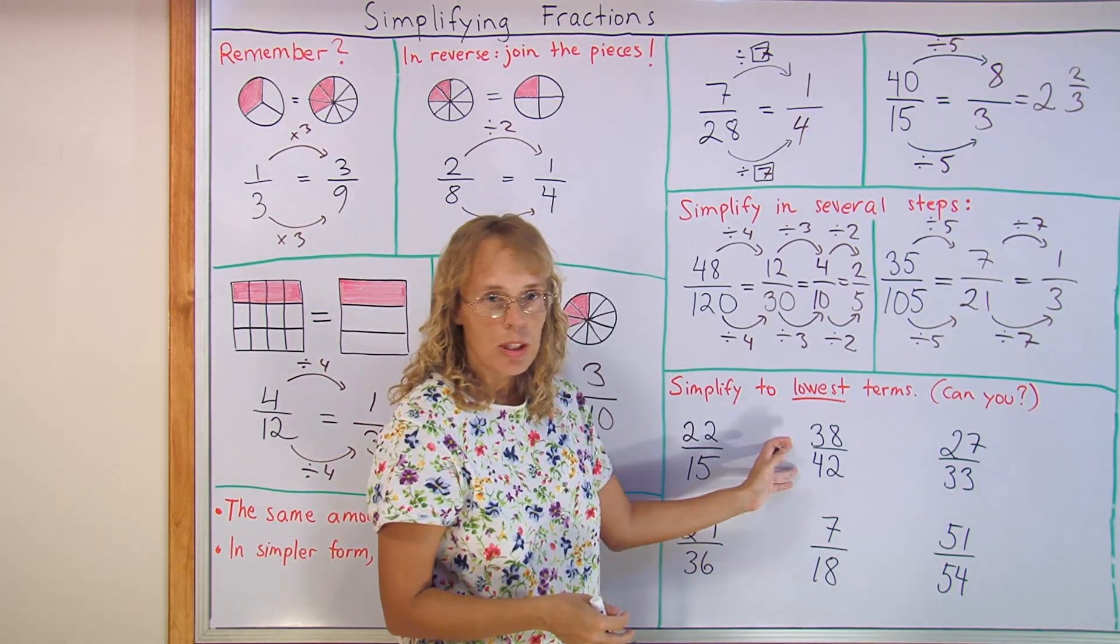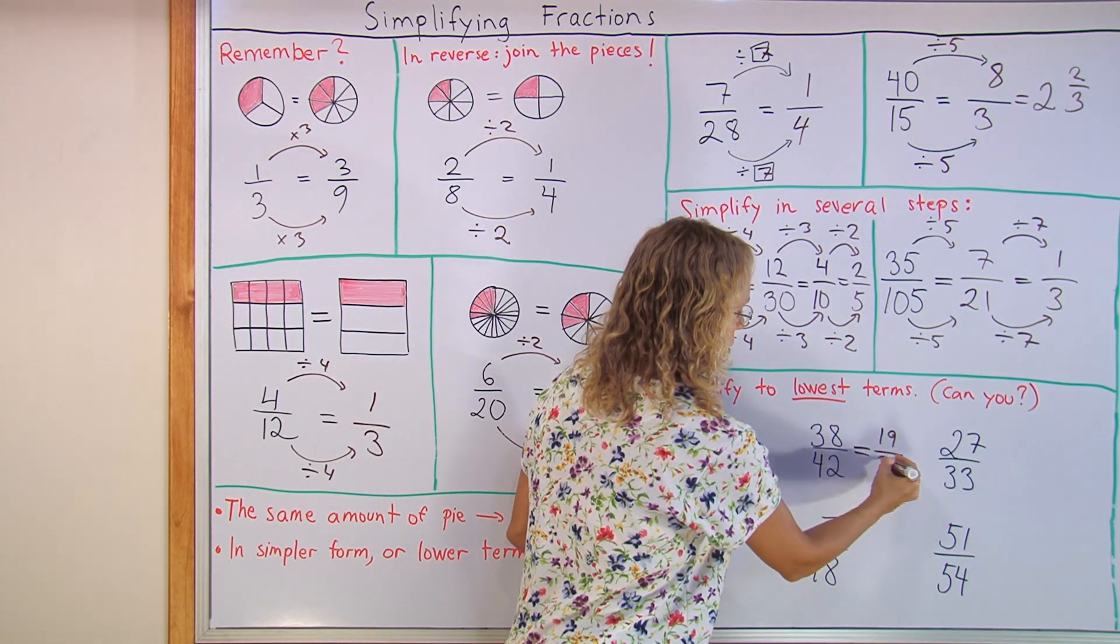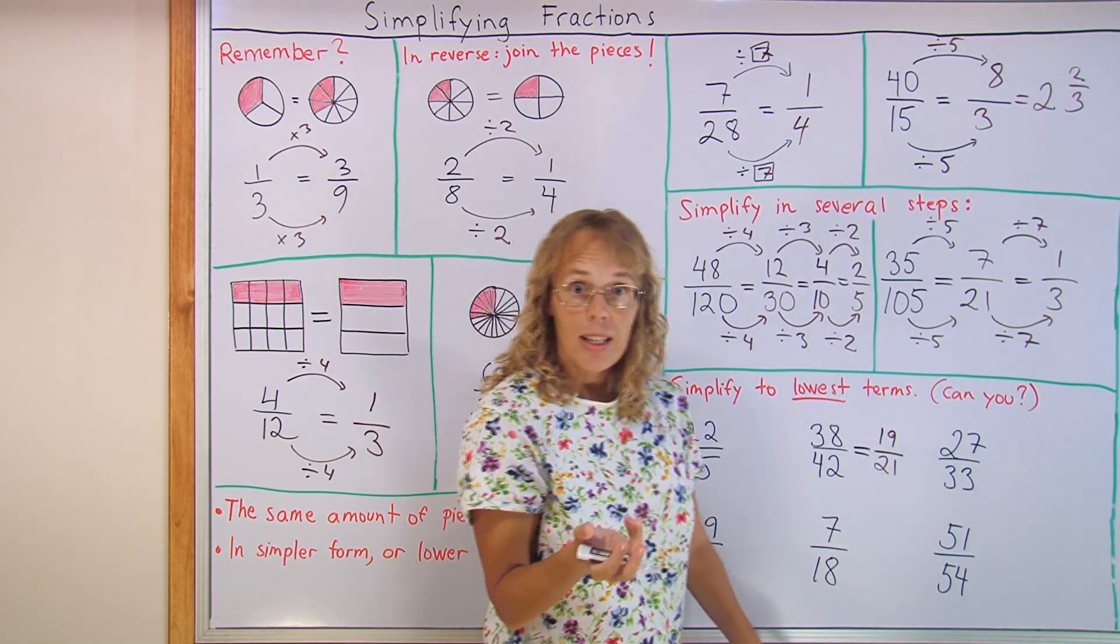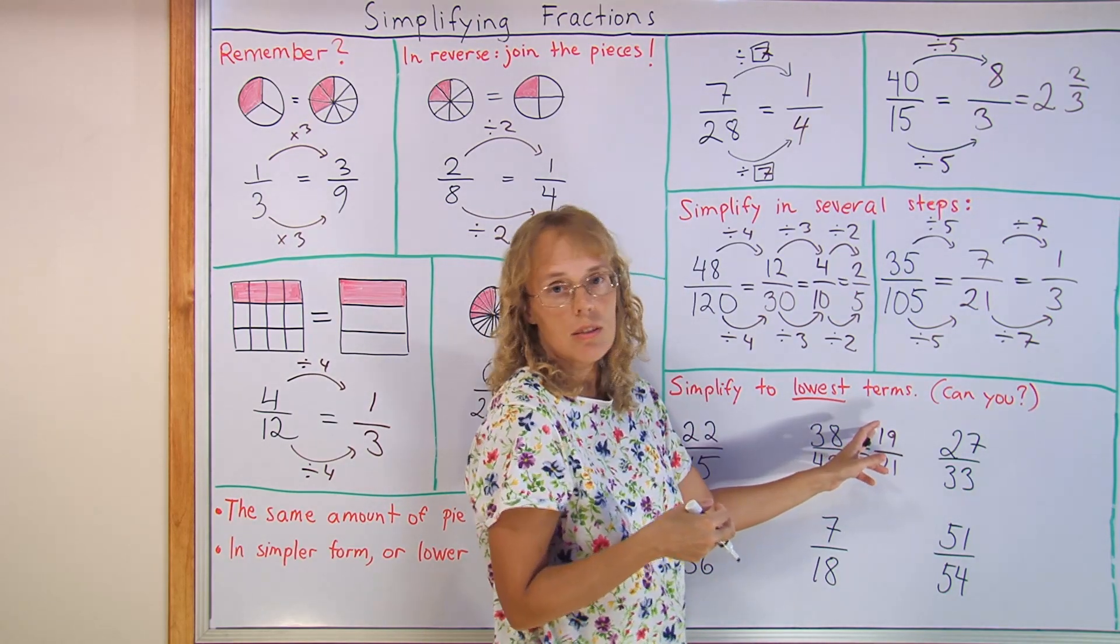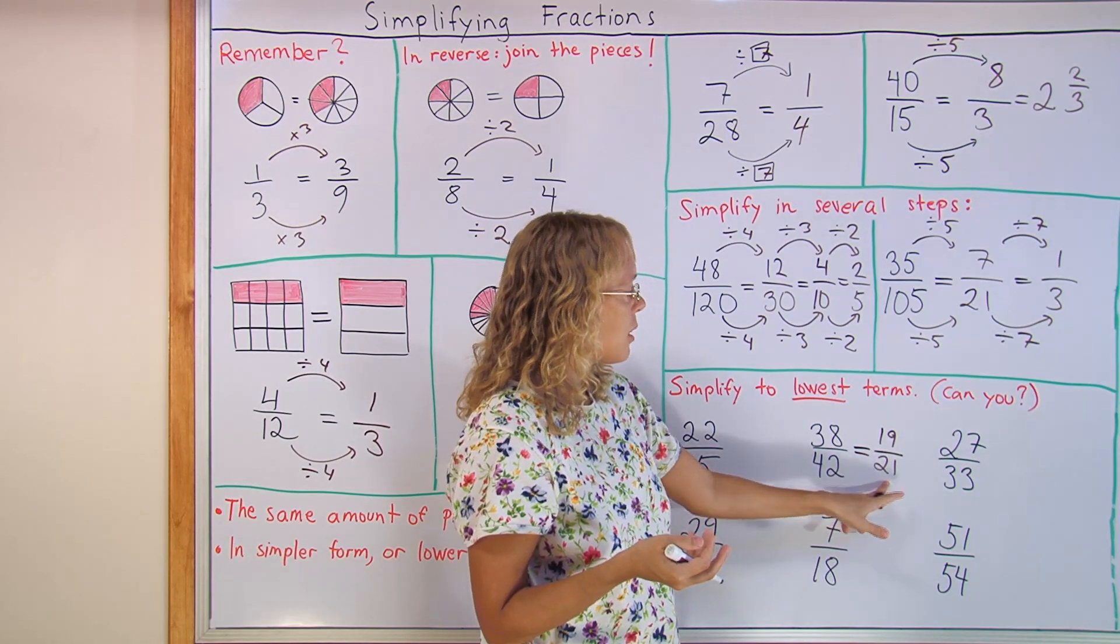Here, both are divisible by two, so I can simplify to nineteen and twenty-one. But now I cannot simplify any further. Nineteen is prime. It's not divisible by anything but nineteen and one. So this is in lowest terms.